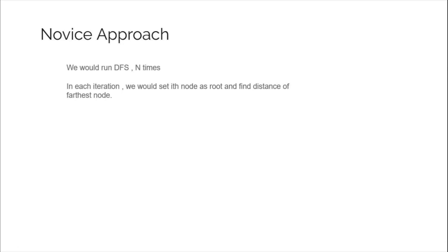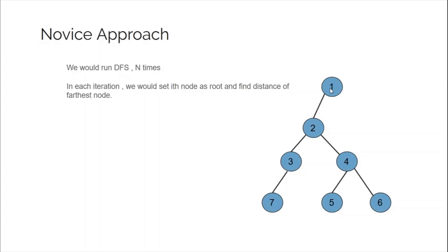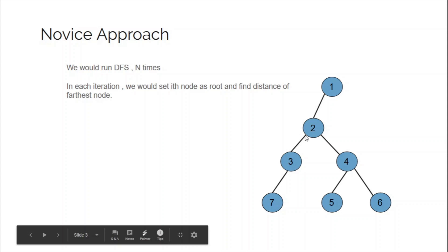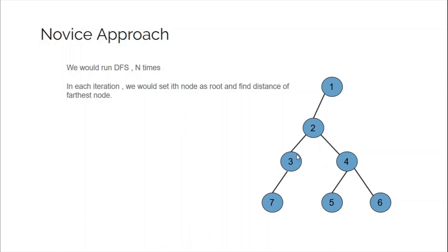You can calculate the diameter of a tree using DFS n times. Each time you choose a root and run a DFS to calculate the farthest node from it, then update your maximum. For example, if you choose node 1 as root, the farthest distance is 3, so maximum becomes 3. Starting DFS from node 2, the farthest node — 7, 5, or 6 — is at distance 2. Choosing node 3, the farthest node is at distance 3.